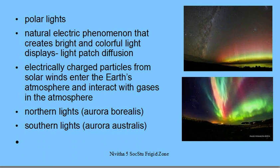The most important feature of the polar region or Frigid Zone is the polar lights. The polar lights are also called auroras. There are two types of auroras: Aurora Borealis — B-O-R-E-A-L-I-S — and Aurora Australis — A-U-S-T-R-A-L-I-S. The borealis is the northern light and the australis is the southern light.